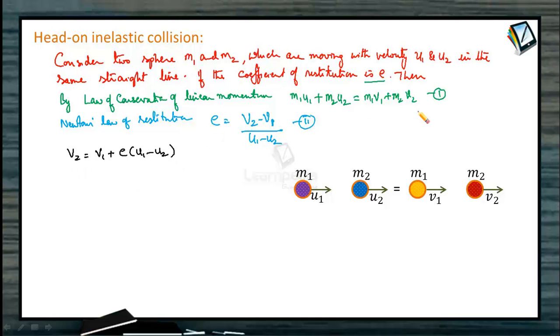Substituting value of v2 in equation number 1, m1 u1 plus m2 u2 is equal to m1 v1. Now I am going to substitute the value of v2. v2 will be v1 plus e times u1 minus u2. Let us expand it.